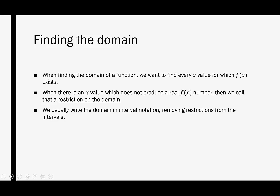We usually write the domain in interval notation, removing restrictions from the intervals. For example, if 2 creates some issue, whereas the domain should be all real numbers, we would pull 2 out of the domain and write it as negative infinity to 2 and 2 to infinity. We're saying it's every real number from negative infinity to infinity, but pulling 2 out of the domain.